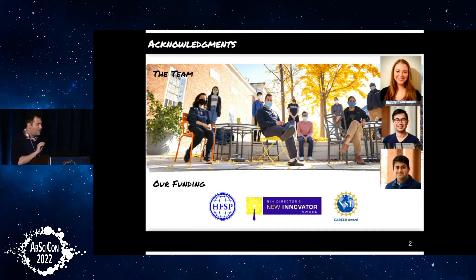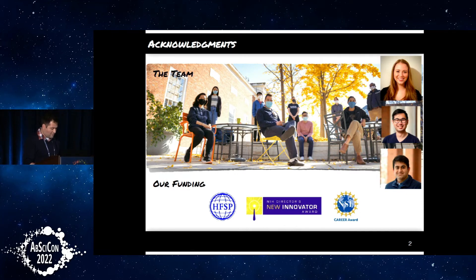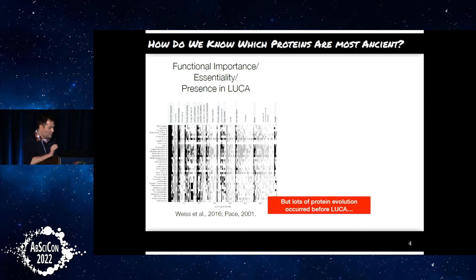I'm going to acknowledge the individuals and organizations that made this research possible. I'm going to talk about the work of three of my students: graduate students Philip Toe and Haley Moran, and a very talented undergraduate Tarva Bhagwat. We've received support from HFSP, NIH, and NSF. How do we know which proteins are the most ancient? We can infer that proteins are probably ancient if they're extremely important and their presence can be inferred in LUCA. But much protein evolution occurred before LUCA, especially of the most fundamental domains. We can also look at phylogeny and distribution by creating trees, but trees can obscure expansion events where rapid diversification of a fold class decouples distribution from the actual order of incorporation into the protein universe.